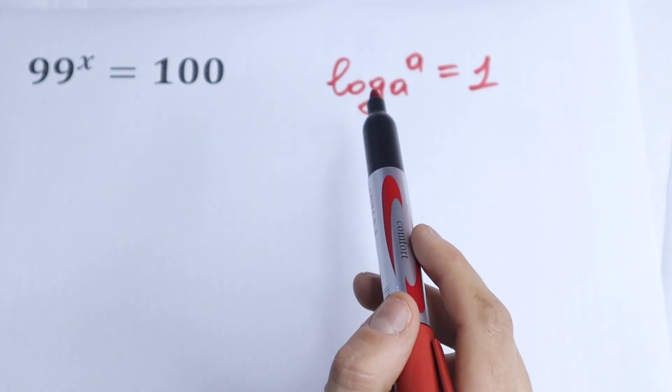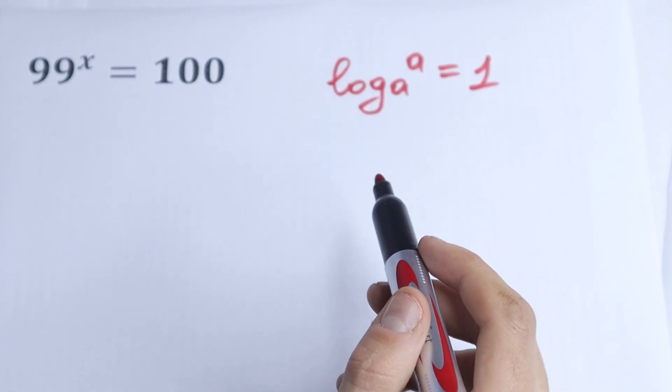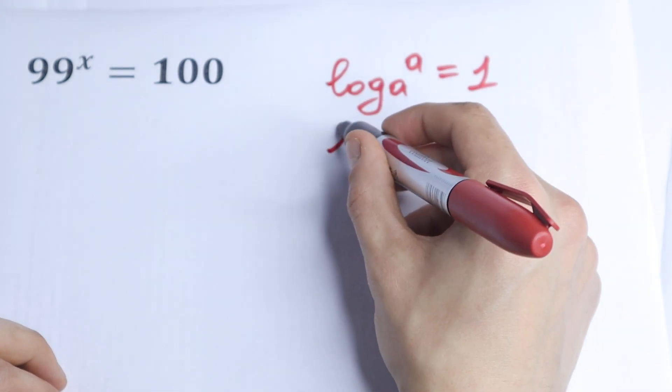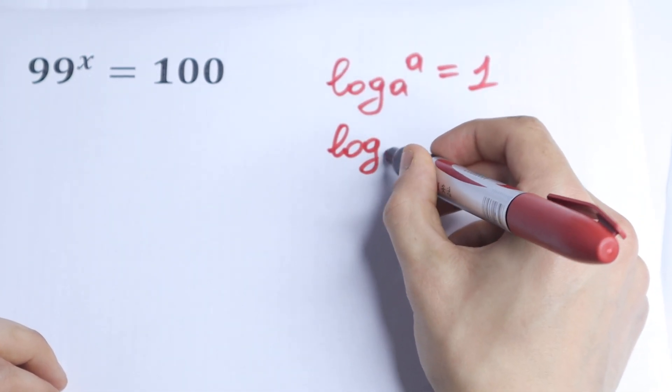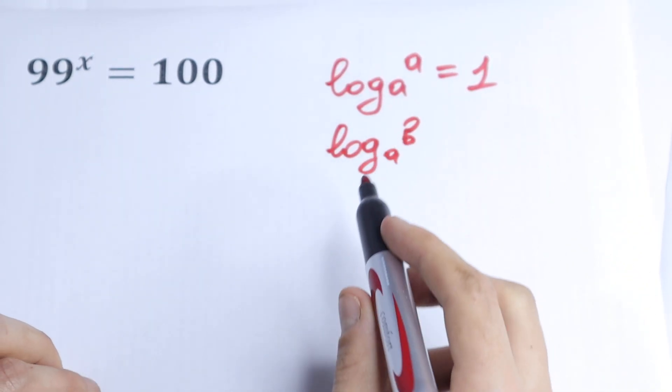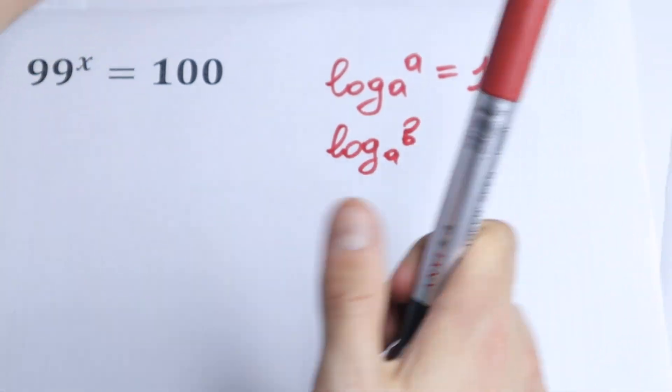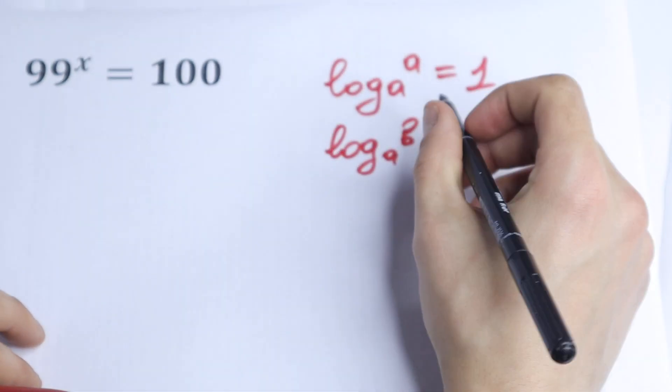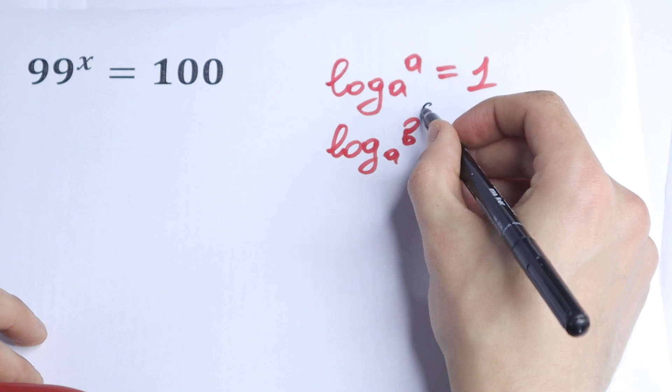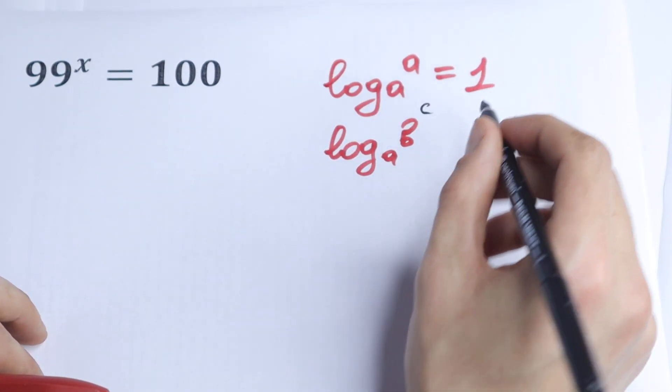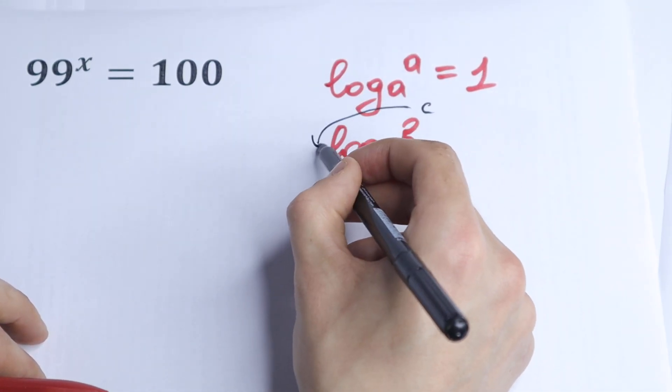So the first rule we need right here, and the second rule we need is, for example, if we have log base a of b, and if we have an exponent under our b, for example c,